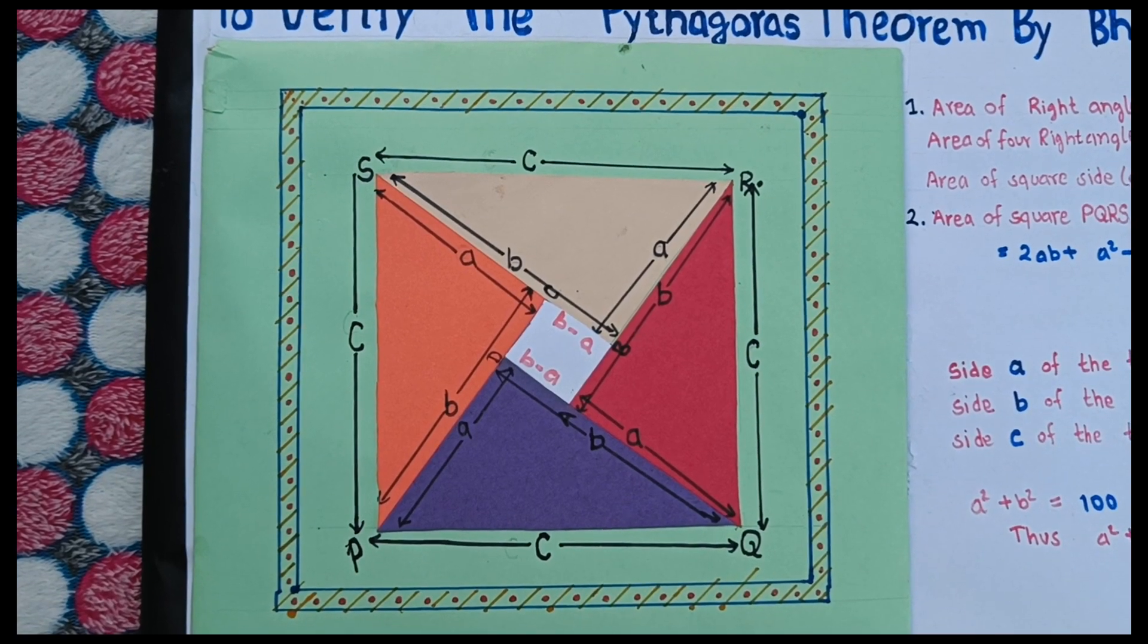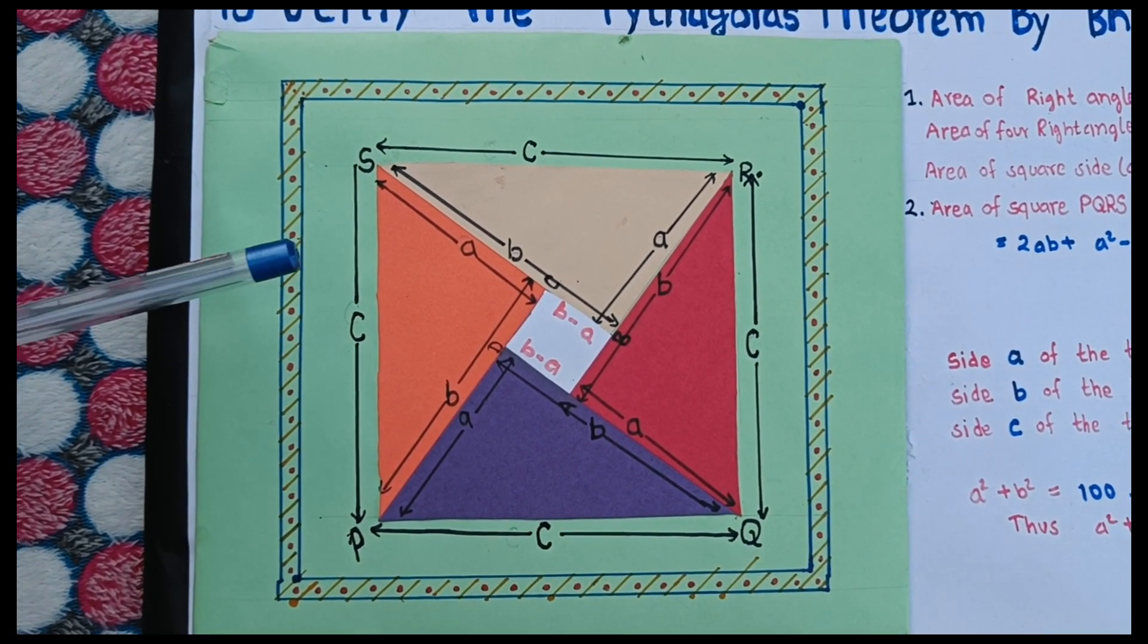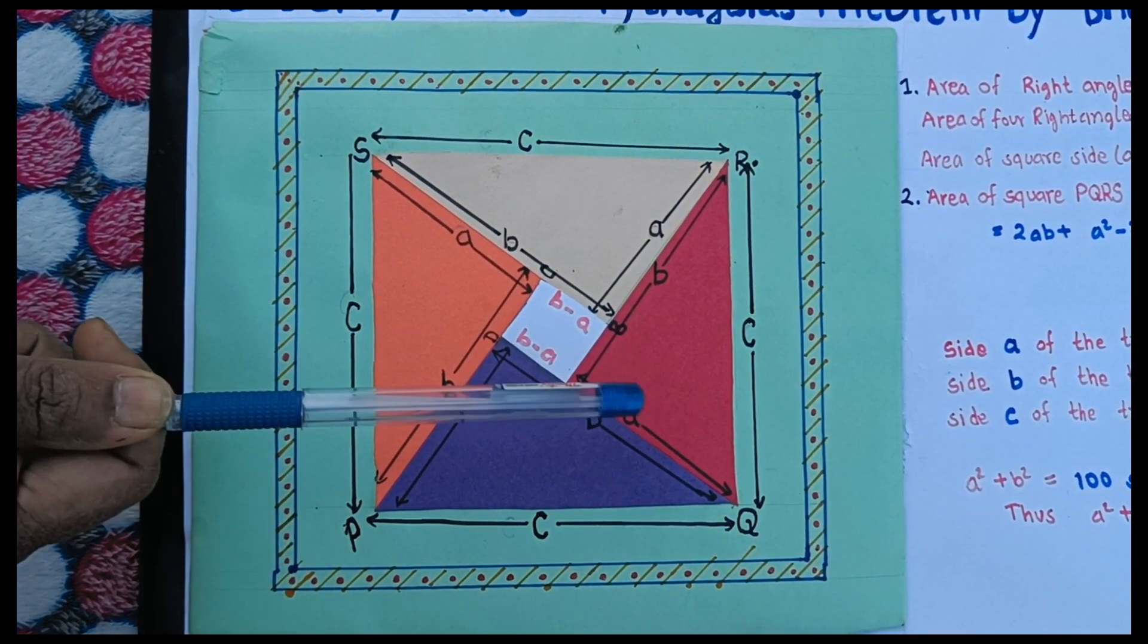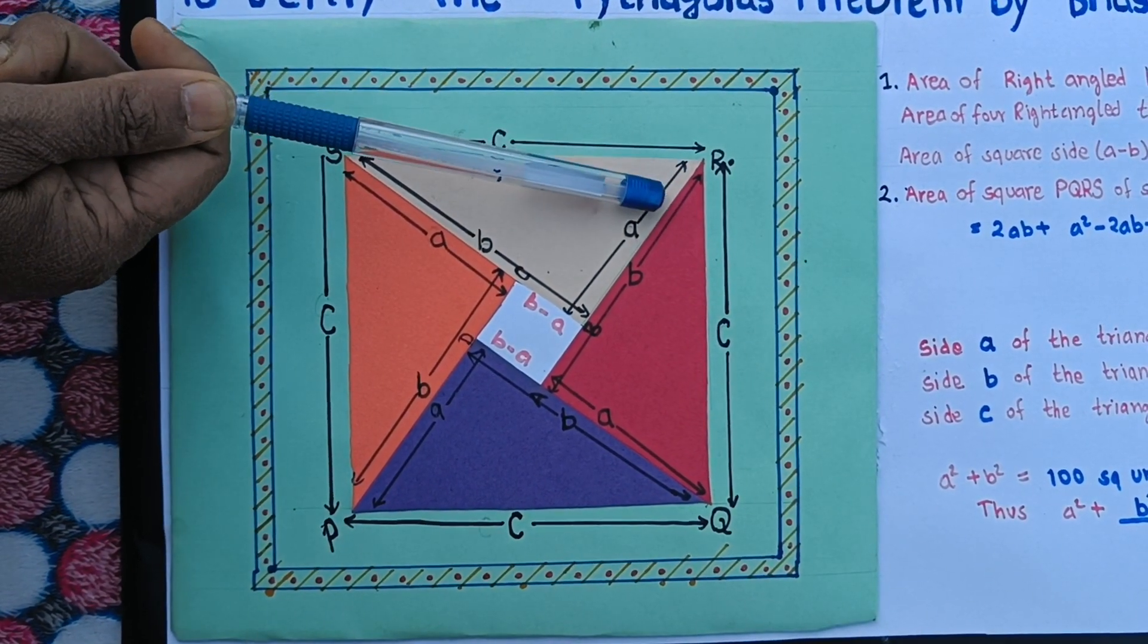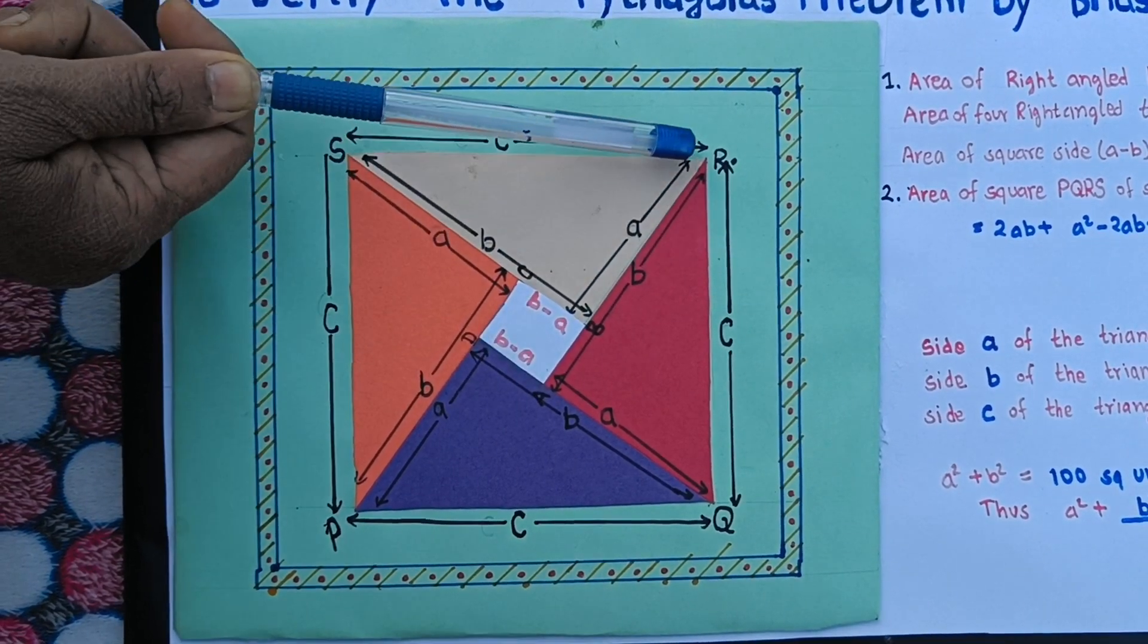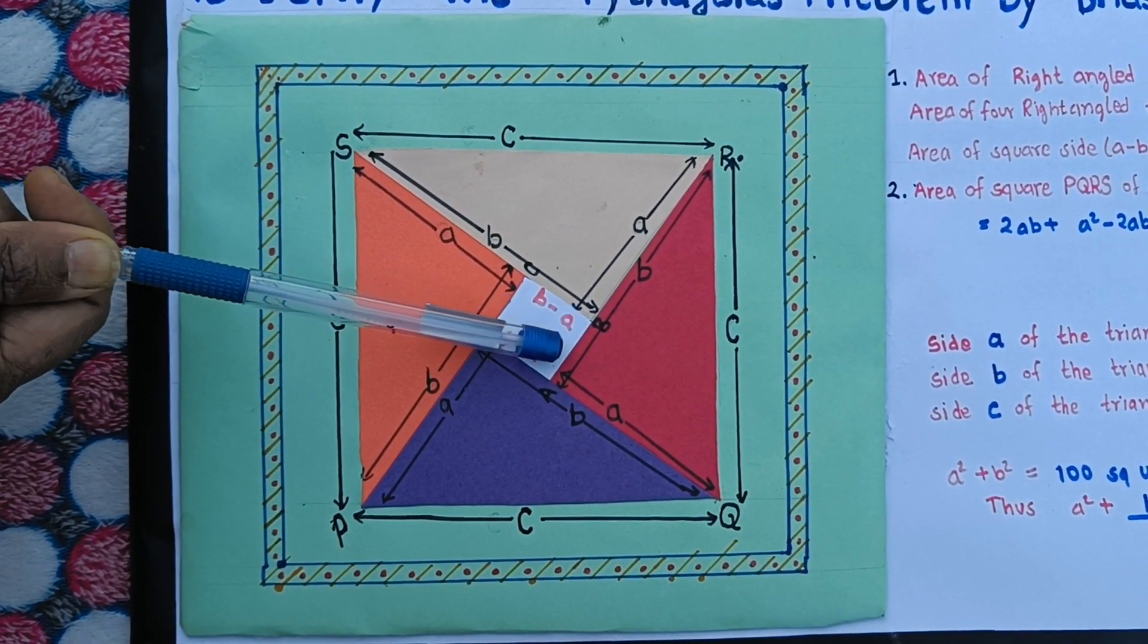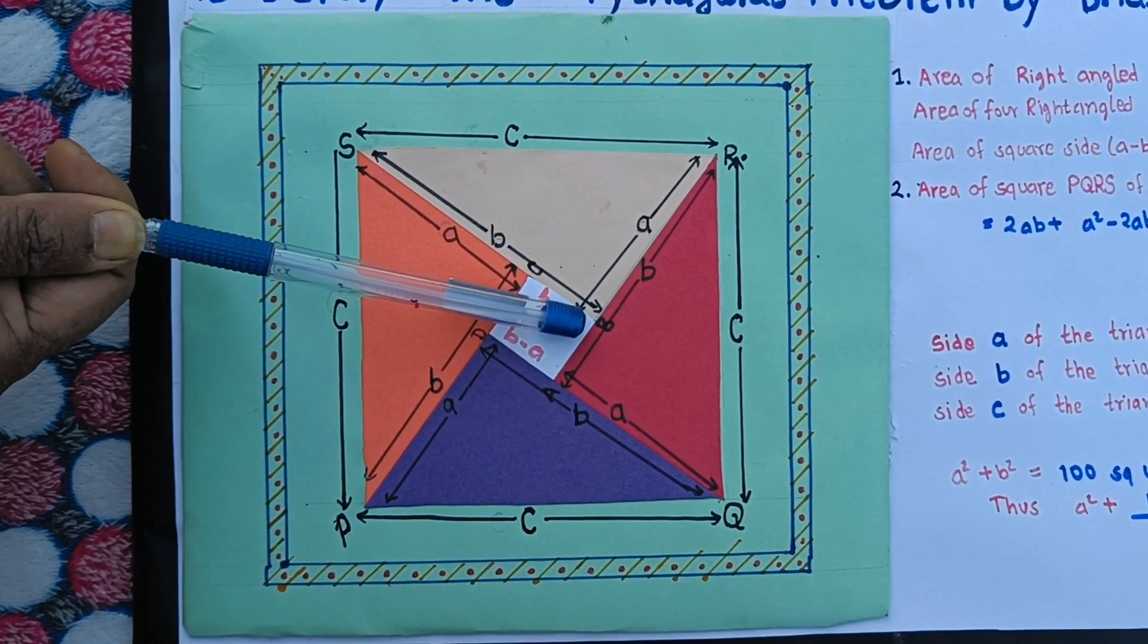Now by another way, the area of square is the area of four right-angled triangles plus this small square. If we see here, side of right-angled triangle is B unit and this is A unit, so the remaining length is B minus A unit.